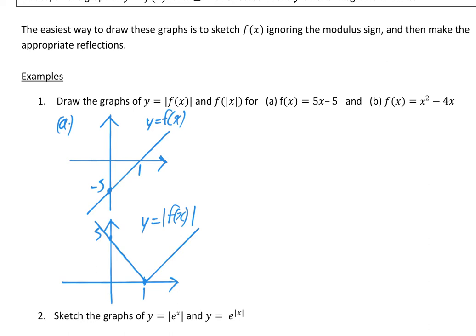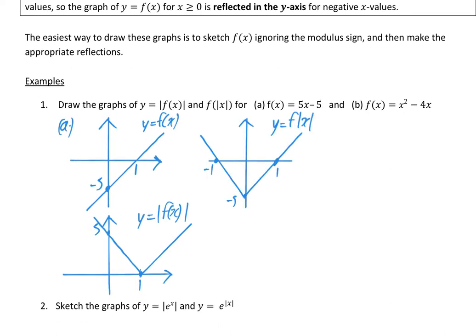Next we're going to do f(|x|). Go back to the original graph — any bits on the left-hand side disappear and we just reflect the right-hand side. This bit gets reflected over so the y-axis becomes a line of symmetry effectively. And there we have our resulting graph of y = f(|x|).